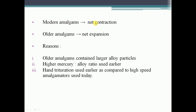Modern amalgams show net contraction; older amalgams showed net expansion. The reason: older amalgams contained larger alloy particles with high mercury-to-alloy ratios, and hand trituration was used instead of high-speed amalgamators.